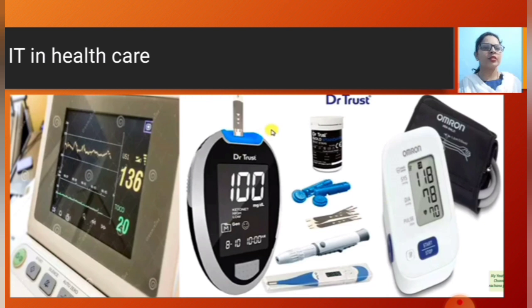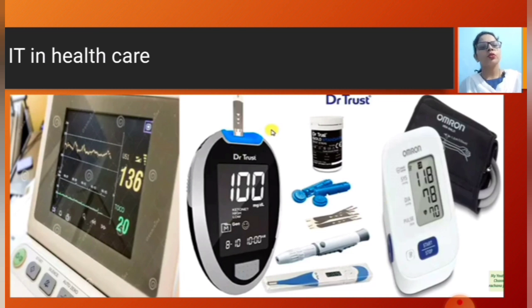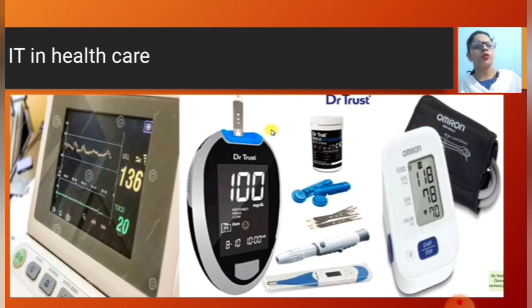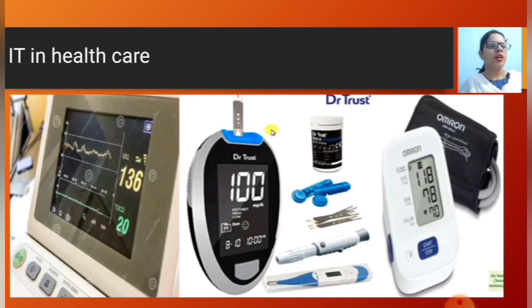There are also some instruments related to healthcare. This machine is used for sugar (blood glucose), this machine is used for blood pressure checking, and that is a thermometer. All these instruments are used as diagnostic tools.